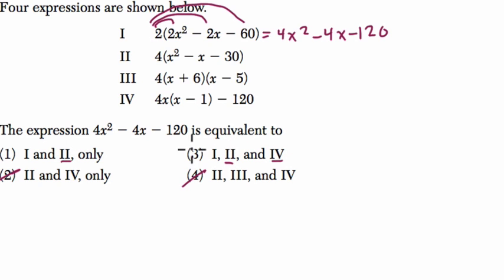So if 4 is equivalent, then choice 3 is my answer. 4x times x is 4x². 4x times -1 is -4x. And then that minus 120, it is equivalent. So choice 3 is the answer.